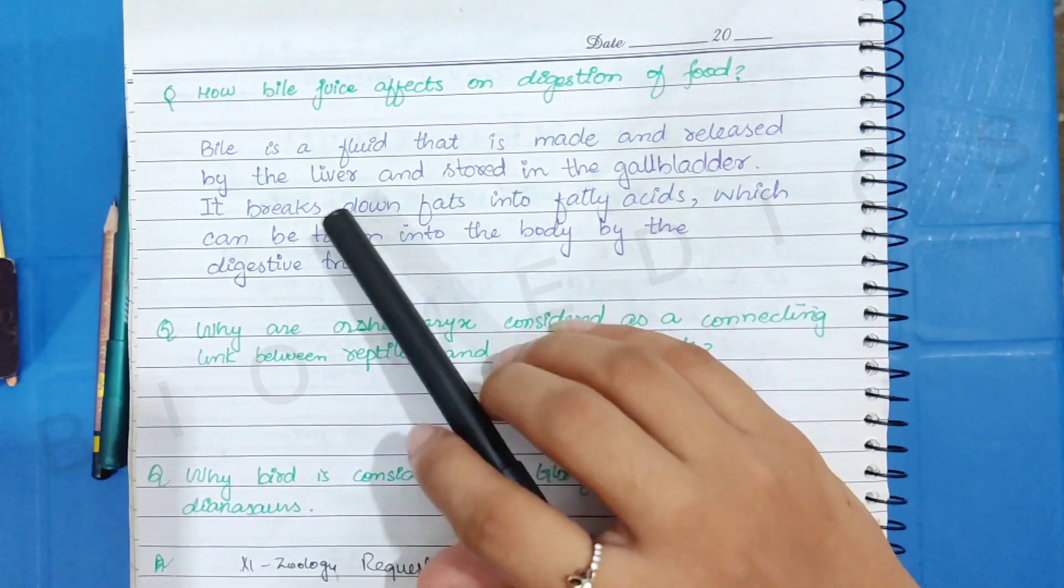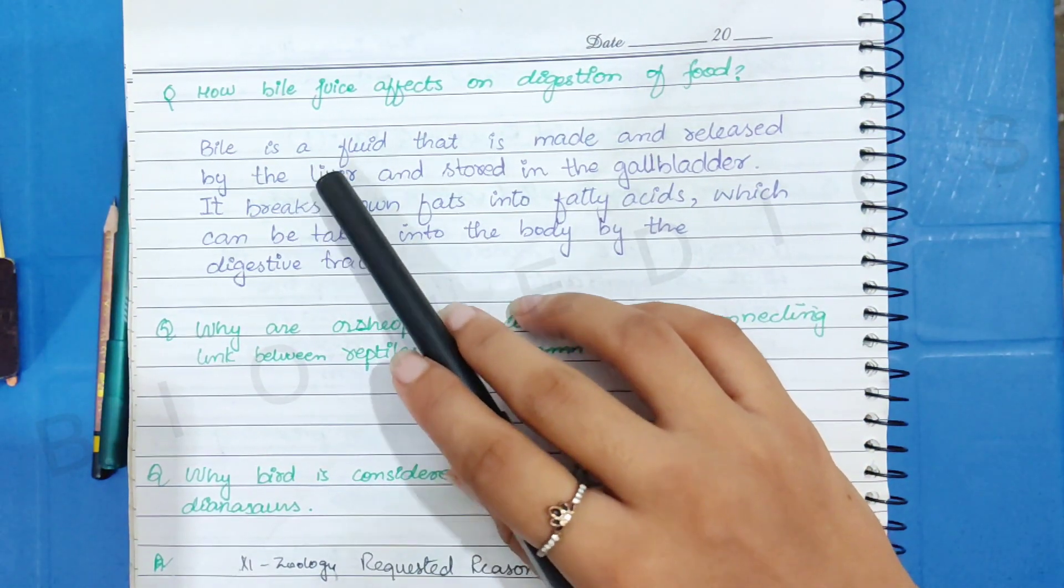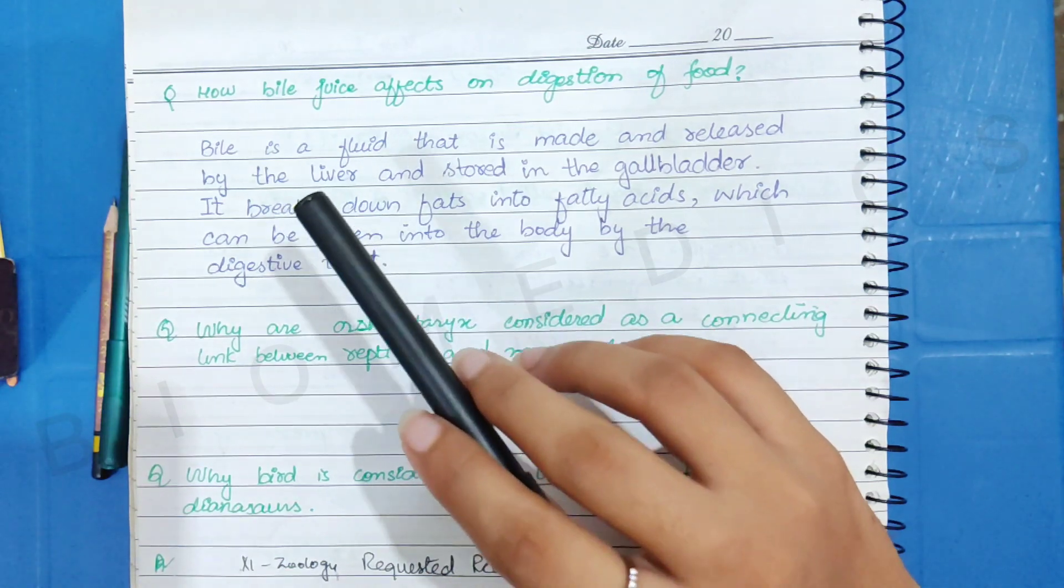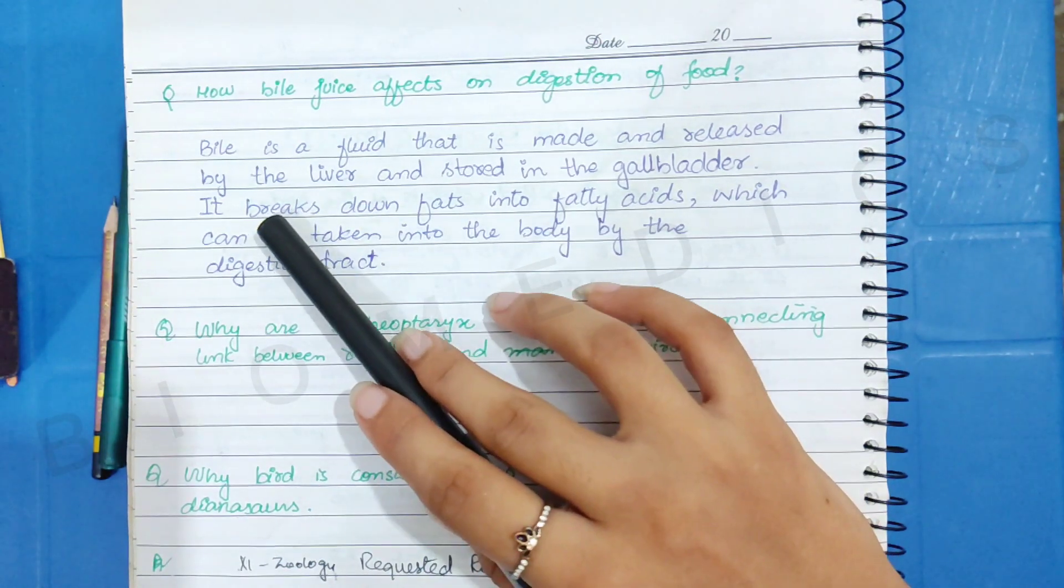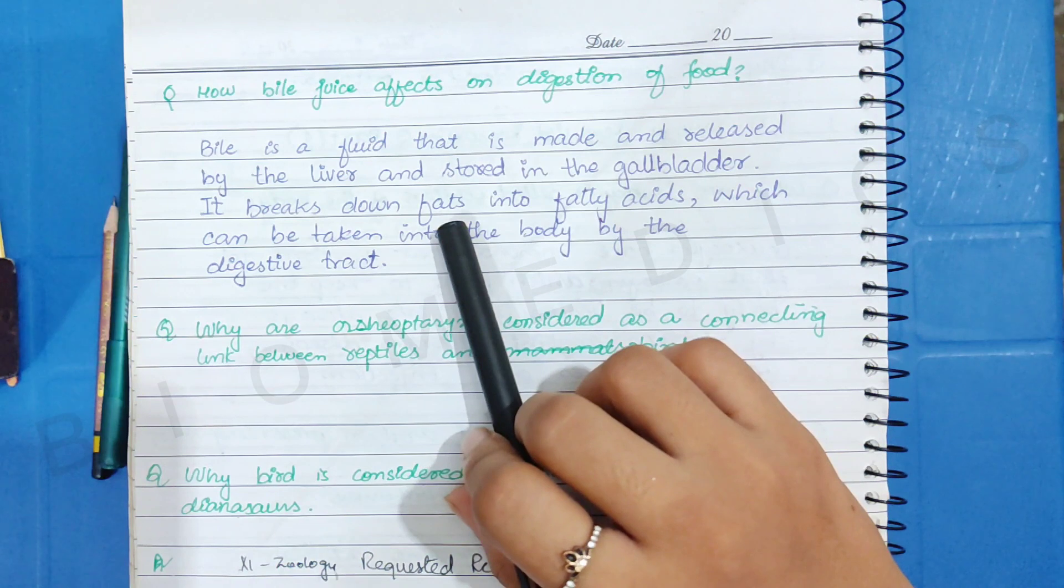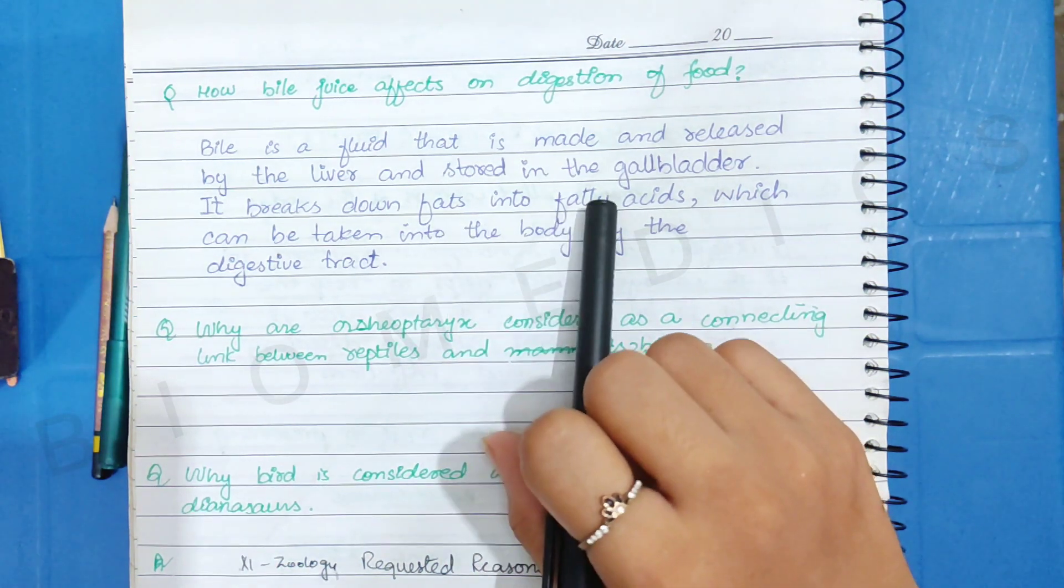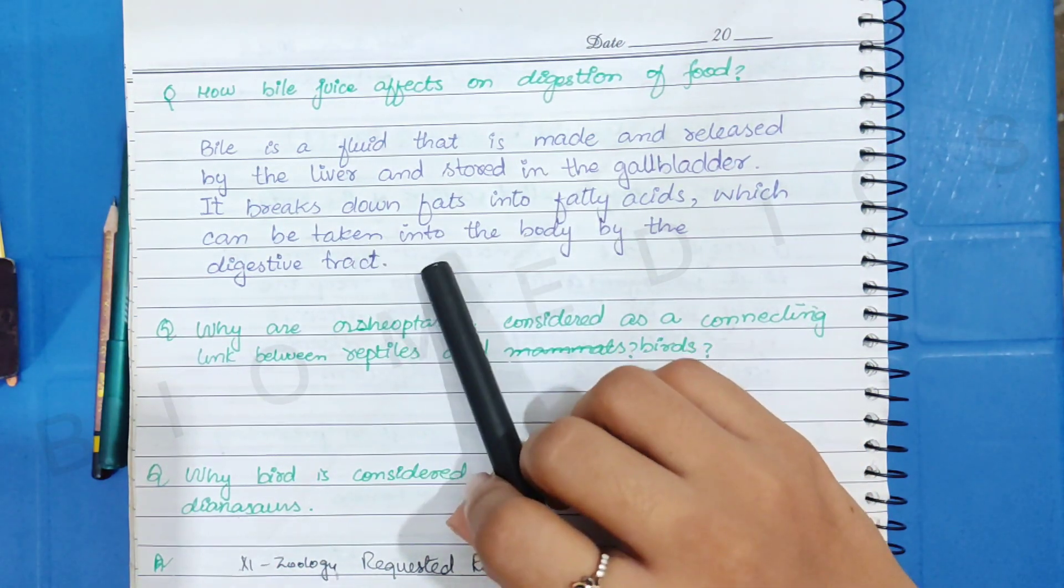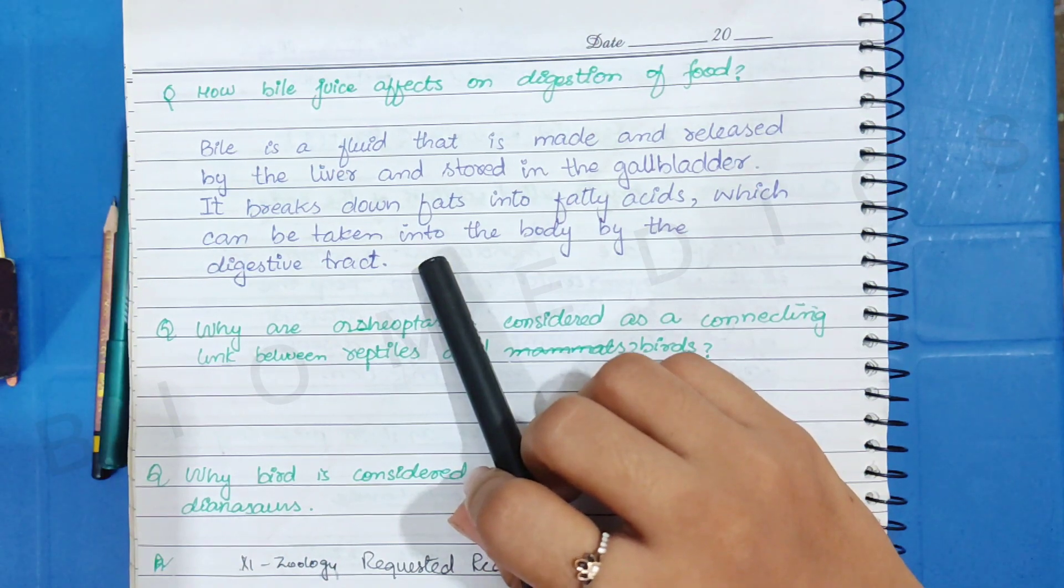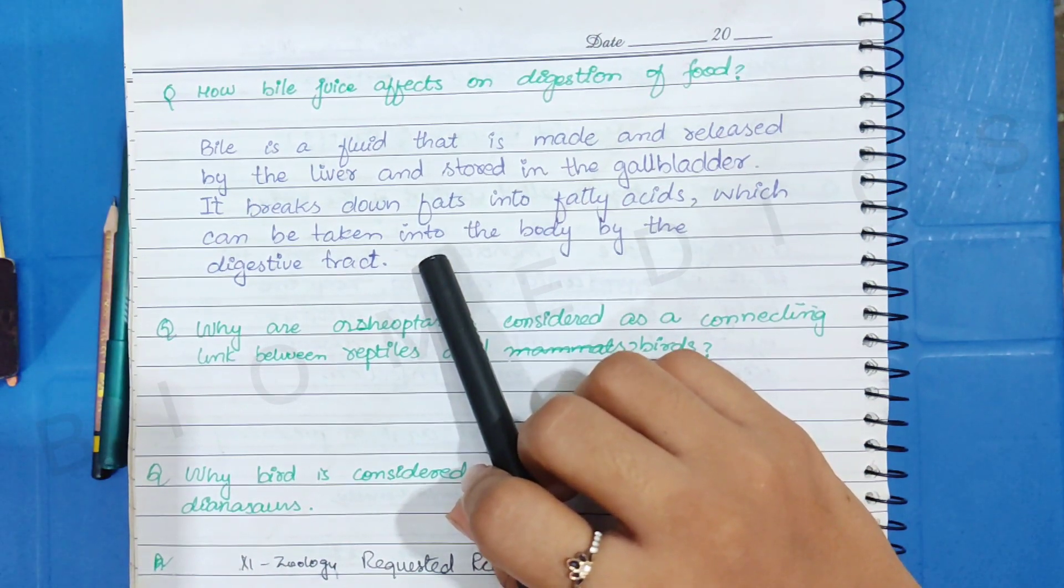This is also important for MCQs. So you have to remember where it is stored and it is released from the liver. Then, what does it do? It breaks down into simpler fatty acids. Then it takes our body from the digestive tract and uses it for different purposes.